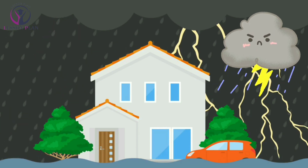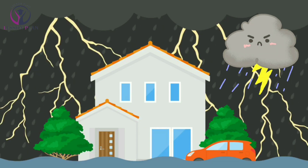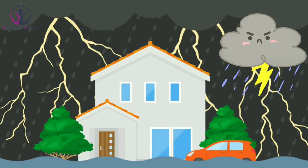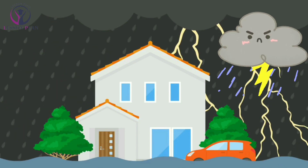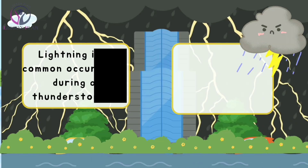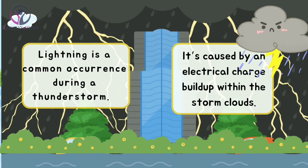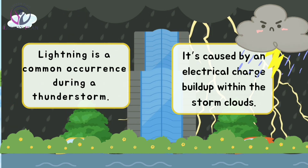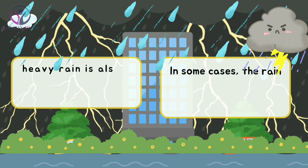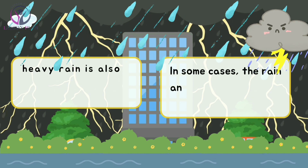Oh no, it looks like we are in for some severe weather. This is what's known as a thunderstorm. Lightning is a common occurrence during a thunderstorm — it's caused by an electrical charge buildup within the storm clouds. And of course, heavy rain is also a hallmark of a thunderstorm.